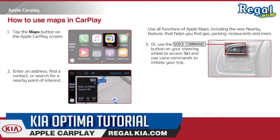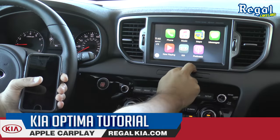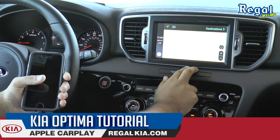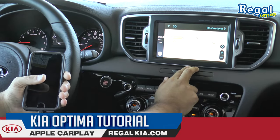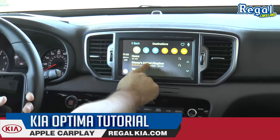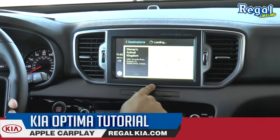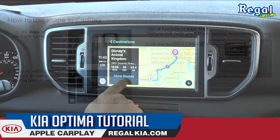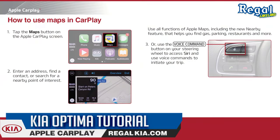How to use Maps in CarPlay. Use all functions of Apple Maps, including the new nearby feature that helps you find gas, parking, restaurants, and more. First, tap on the Maps button on the Apple CarPlay screen. Then enter an address, find a contact, or search for a nearby point of interest. You could also use the voice command button on your steering wheel to access Siri and use voice commands to initiate your trip.